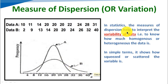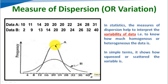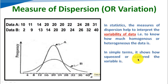In statistics, the measure of dispersion helps to interpret the variability of the data. It means to know how much homogenous or how much heterogeneous the data is. Homogenous data or heterogeneous data can be understood with the help of the measure of dispersion. In simple terms, it shows how squeezed or scattered the variable is.